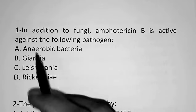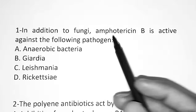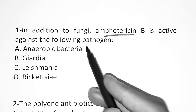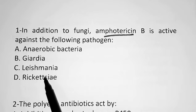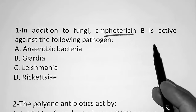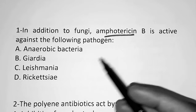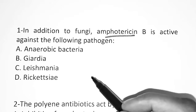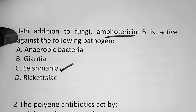The first question: In addition to fungi, Amphotericin B is active against which of the following pathogens? Option A, anaerobic bacteria. Option B, Giardia. Option C, Leishmania. Option D, Rickettsia. Amphotericin B is an antifungal medicine, and the question asks what is the extra advantage other than antifungal activity. The correct answer is Option C — Leishmania. Amphotericin B is also useful in Leishmania infection.